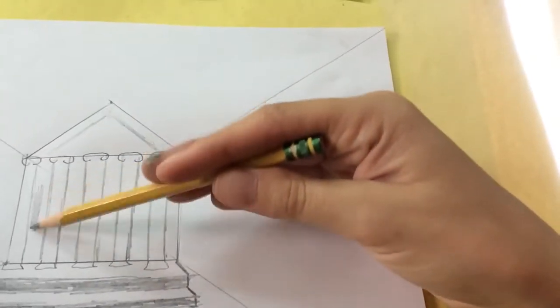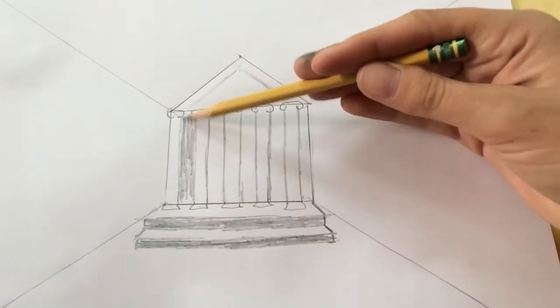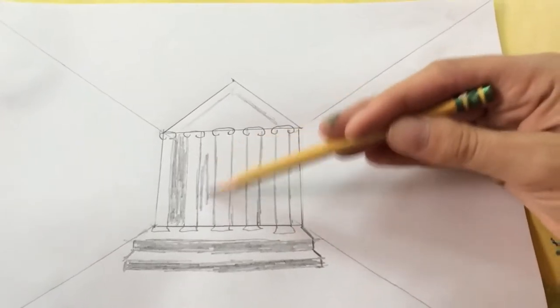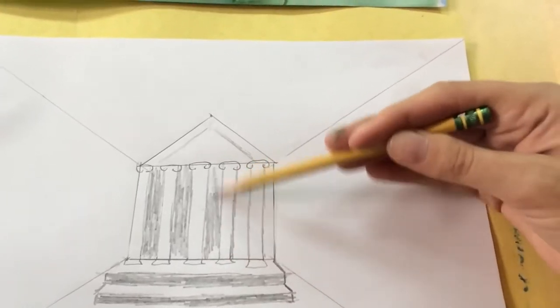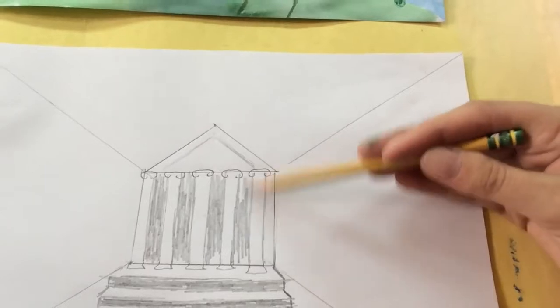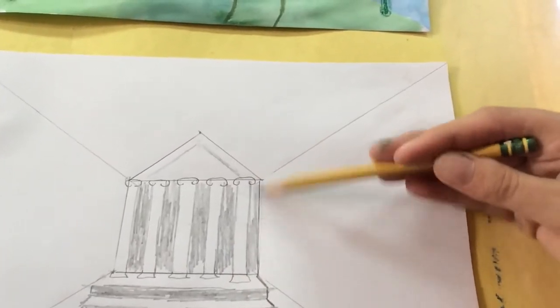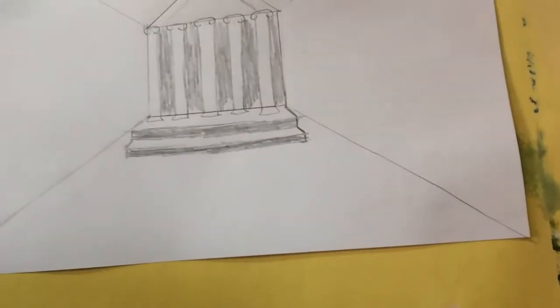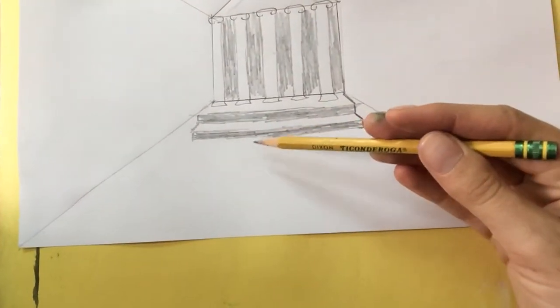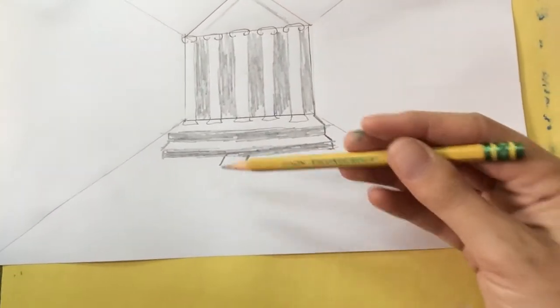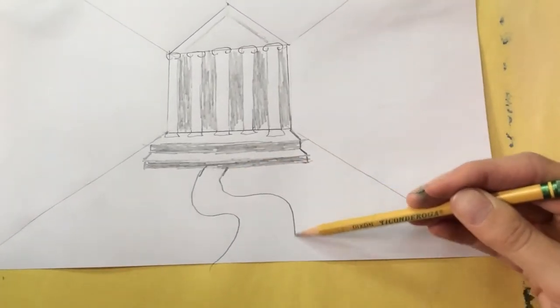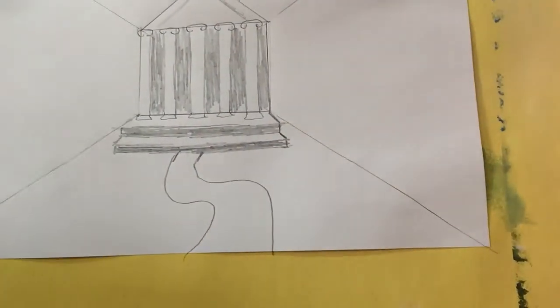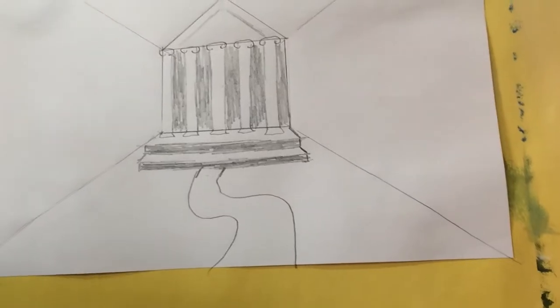Now I'm also going to shade in the spaces in between each column. Because this is the inside of the temple and it would have been dark inside. So I'm shading in between each column. And now I can do a little path that's kind of leading from the stairs, maybe out into the grass. So I'm going to start small, like about that. And then I'm going to get big. Notice how the path gets wider. It widens as it comes towards you, the viewer. Small here because it's further back in the space.